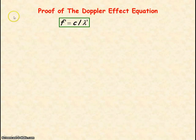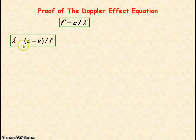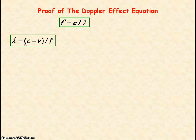Now going to prove the Doppler effect equation for frequency. F prime is the frequency detected by the observer, and that equals the wave speed divided by the wavelength detected by the observer, lambda prime. We saw earlier that lambda prime equals C plus V divided by the frequency, for a source of waves moving away from the observer.